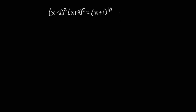Hello, in this video we are solving for the value of x. To do this we are going to apply one of the properties of indices, which states that if we have a exponent n times b exponent n, because they have the same exponent, it can be written as a times b all exponent n.